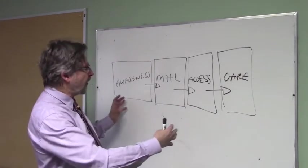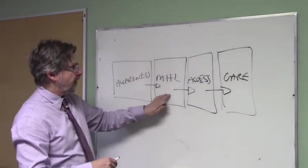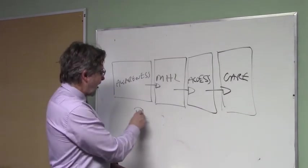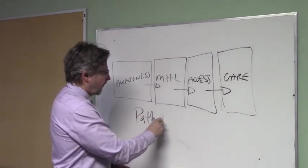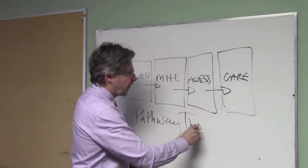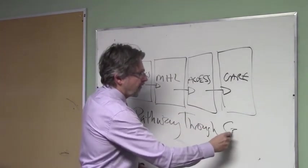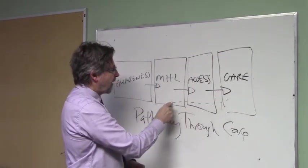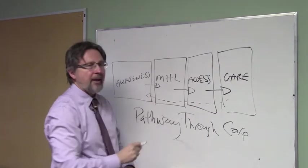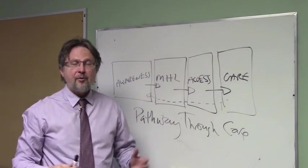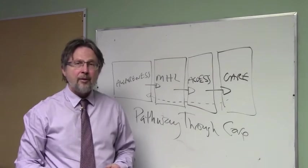When we put all these things together, the awareness, the literacy, the access and the care, we get the pathway through care. And the reason it's called through care is because once the path is here, it links back on itself into every single component. That is the framework for the pathway through care.